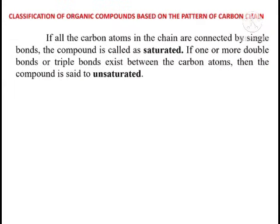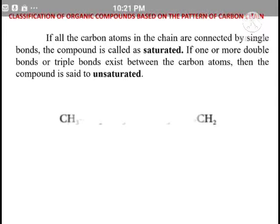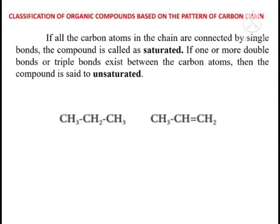Next topic: classification of organic compounds based on the pattern of the carbon chain. If all the carbon atoms in the chain are connected by single bonds, the compound is called saturated. If one or more double bonds or triple bonds exist between carbon atoms, then the compound is called unsaturated. For example, a compound where all bonds are single bonds is saturated; a compound with one double bond present is unsaturated.